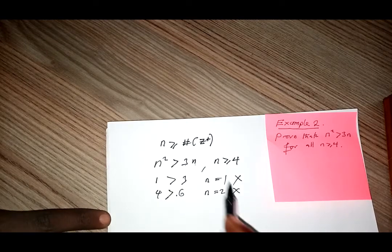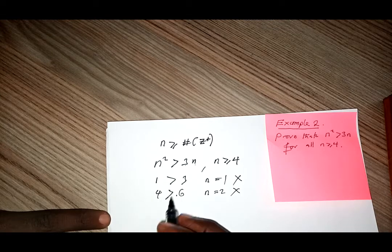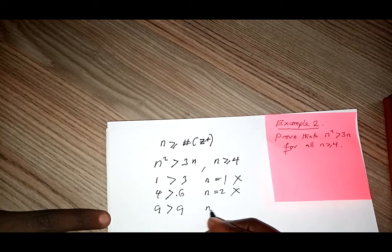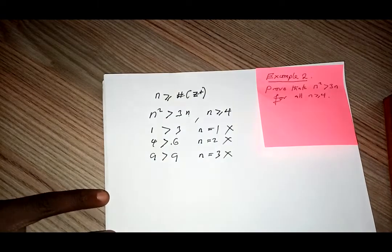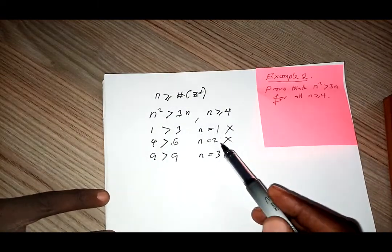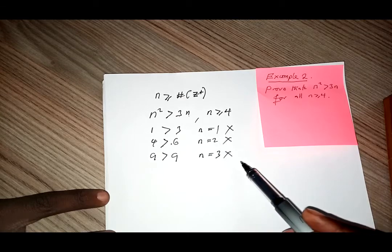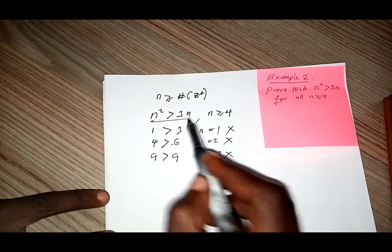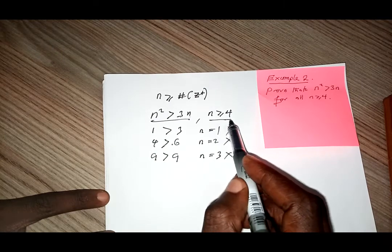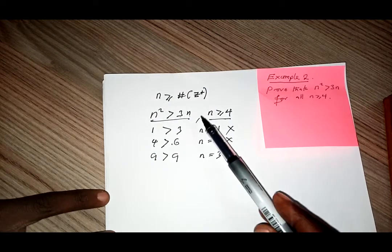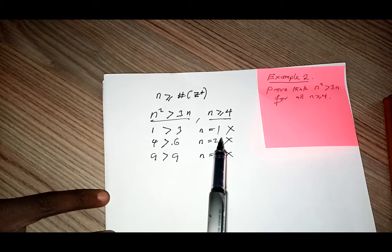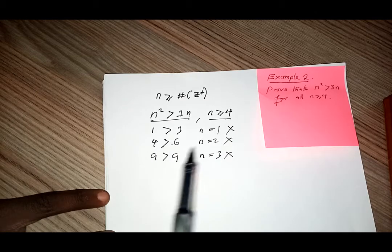What about if n is equal to 3? That gives 3 squared which is 9, and 3 times 3 is also 9 — for n equal to 3, this is not true. So for any value from 1, 2, 3 — that is a positive integer — this condition cannot be satisfied. I was just trying to help you understand that the condition has a minimum requirement.